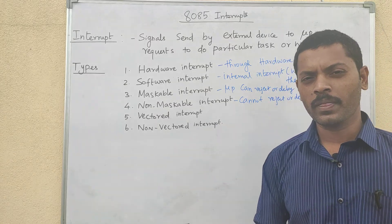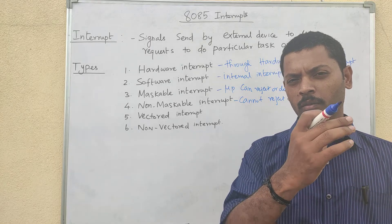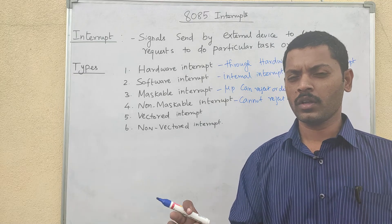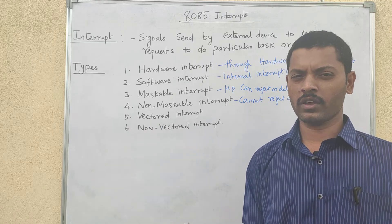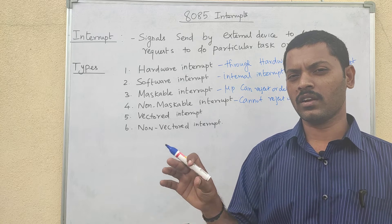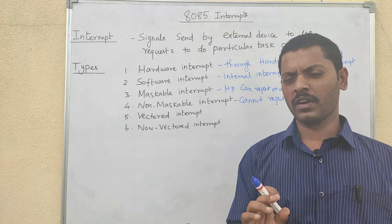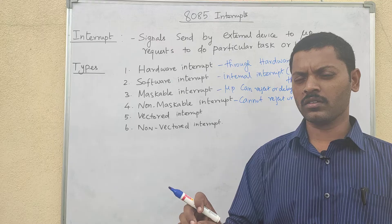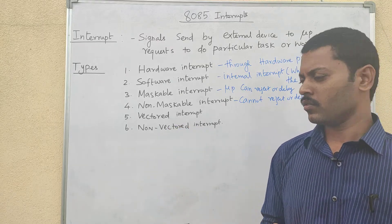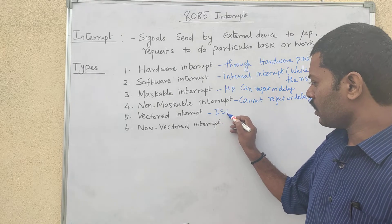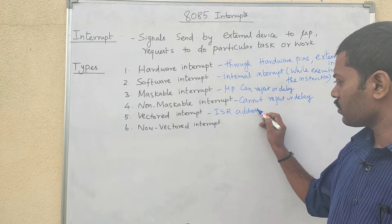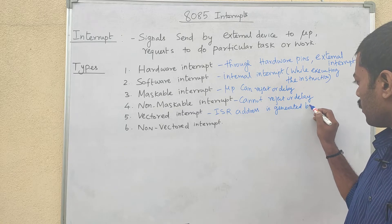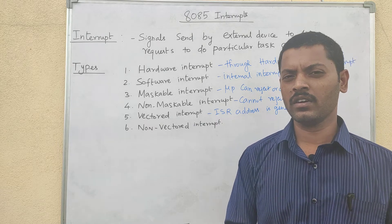Next is the vector interrupt. When an interrupt occurs, control transfers from the main program to the ISR. The interrupt has a fixed address location — that is the vector address. The vector address is the ISR address, and it is generated by the microprocessor internally.